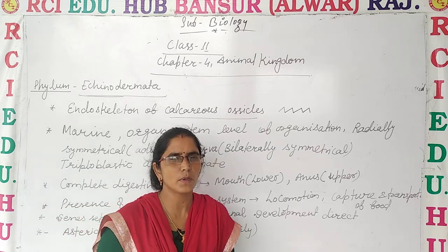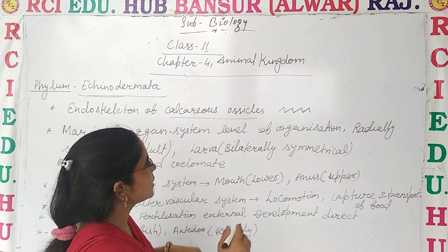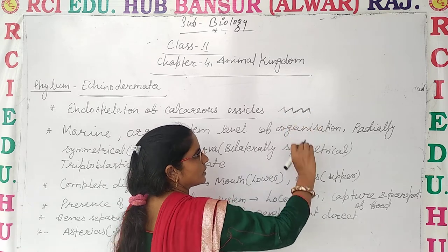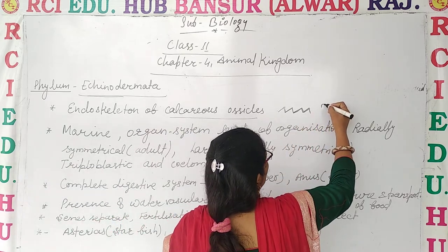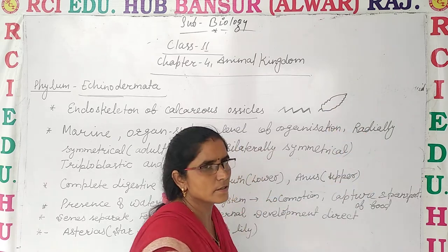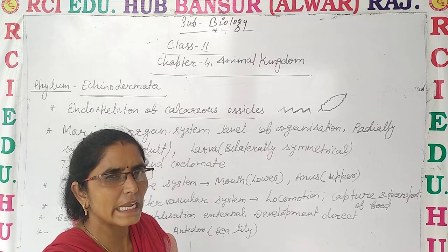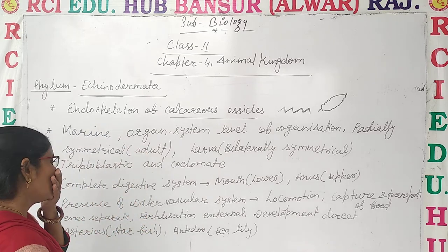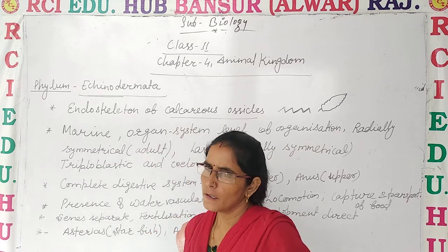Ossicles — just like we have 3 ossicles in our ear — in Echinodermata, calcareous ossicles are present. These ossicles form the endoskeleton. For example, if you look at a starfish's arm, calcareous ossicles form the endoskeleton. That's why the phylum is named Echinodermata.